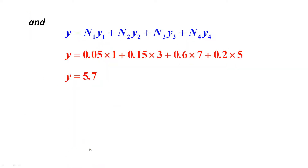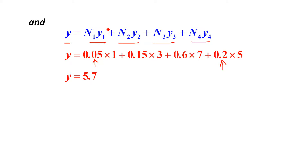Similarly, for the second Cartesian coordinate of point P: y = N1·y1 + N2·y2 + N3·y3 + N4·y4. Using the same four shape functions and the y-coordinates of nodes y1 to y4, if you simplify, you will get y = 5.7.